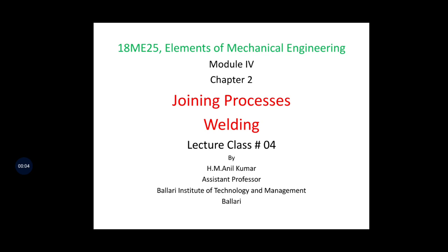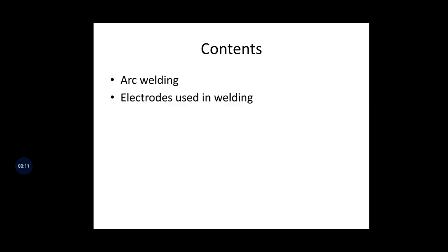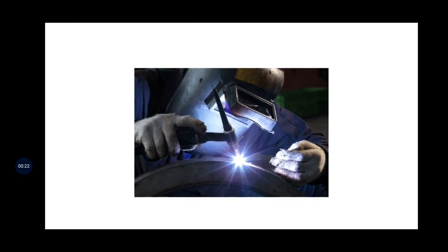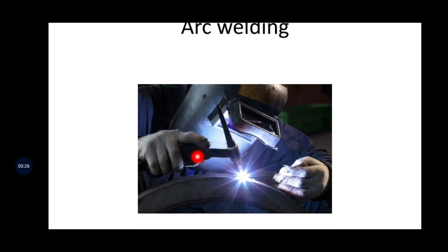Hello students, welcome back to lecture class 4 in module 4 of chapter 2, joining process in the elements of mechanical engineering course. Today we are going to discuss arc welding and electrodes used in the arc welding process. You can see an arc welding figure — a person holding a gun with an electrode, a spark, and a workpiece which may be a circular shell or a pipe. The person is wearing a light on the forehead, goggles, and an apron as safety precautions.